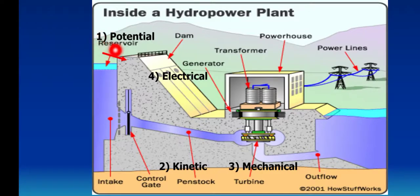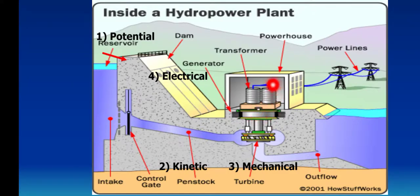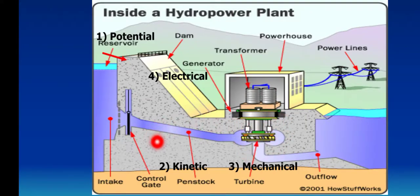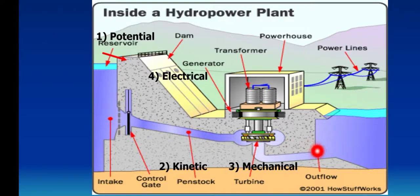Key components of a hydroelectric system are shown: Potential Reservoir, Dam, Generator, Transformer, Powerhouse, Turbine, Penstock, Control Gate, Intake, Outflow, and Power Lines.